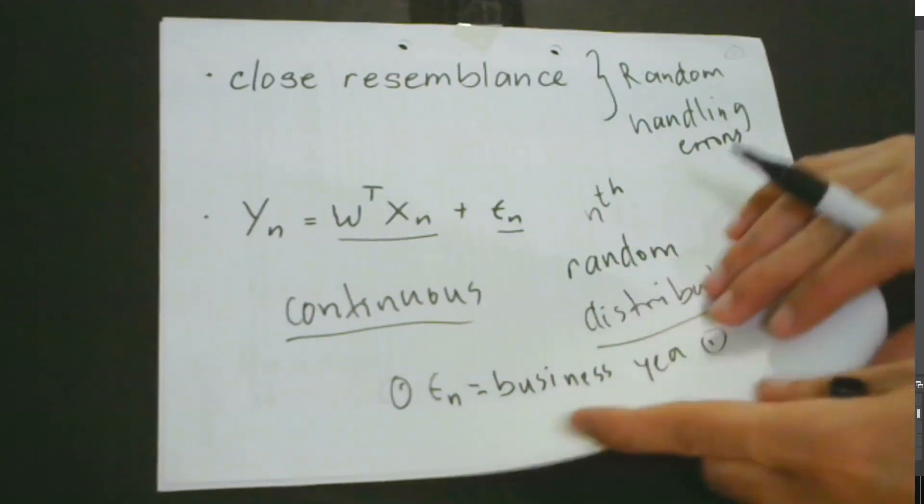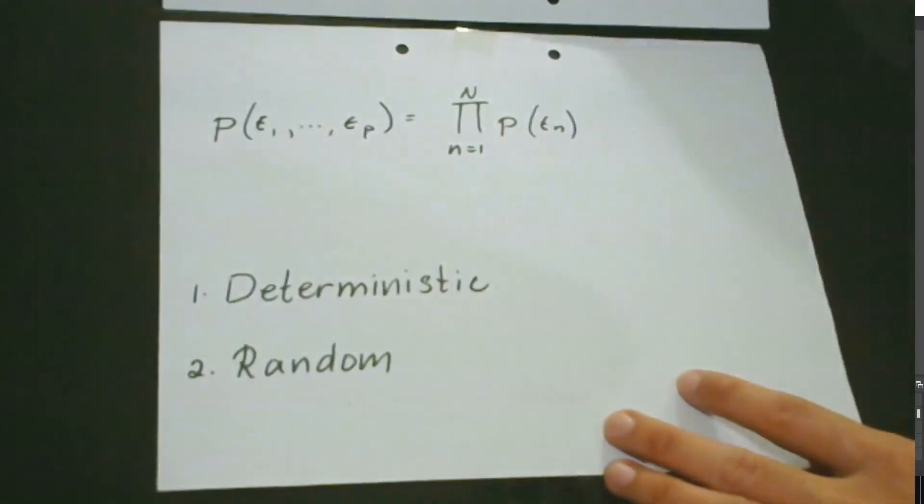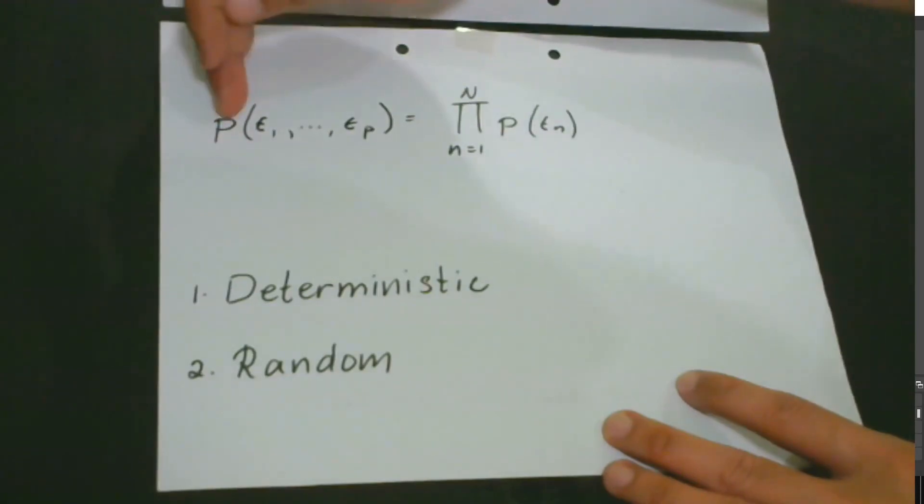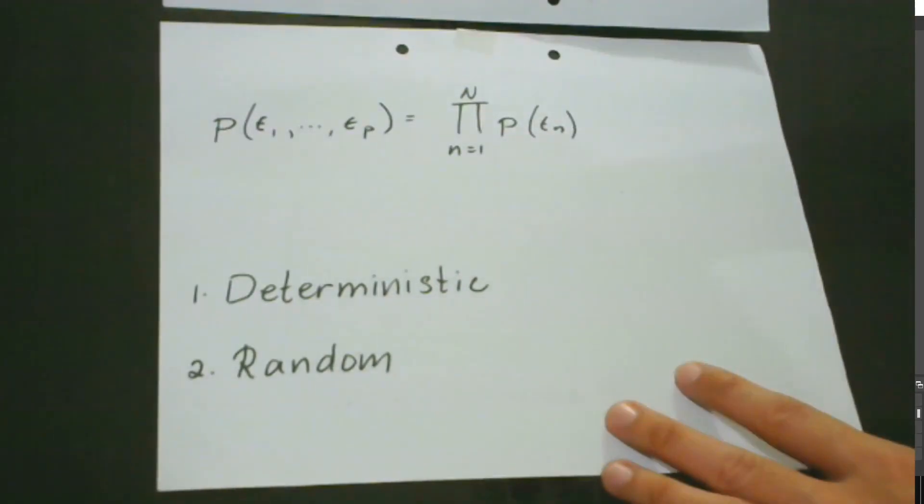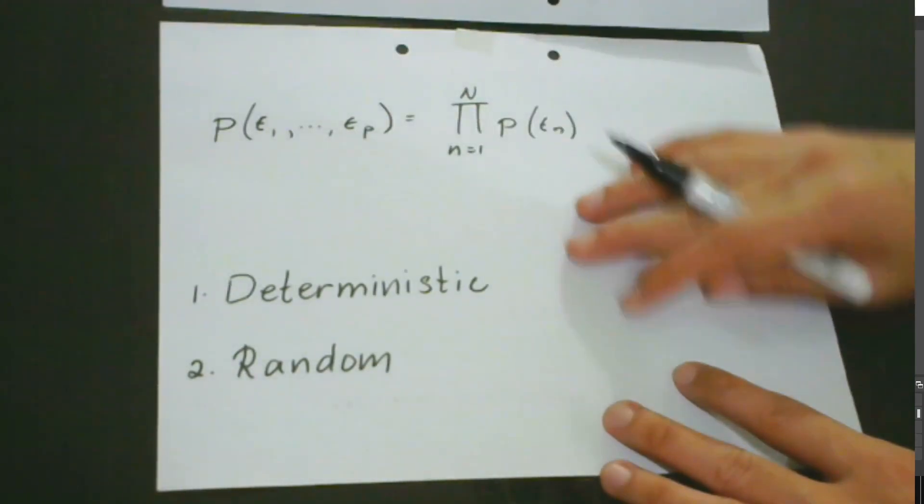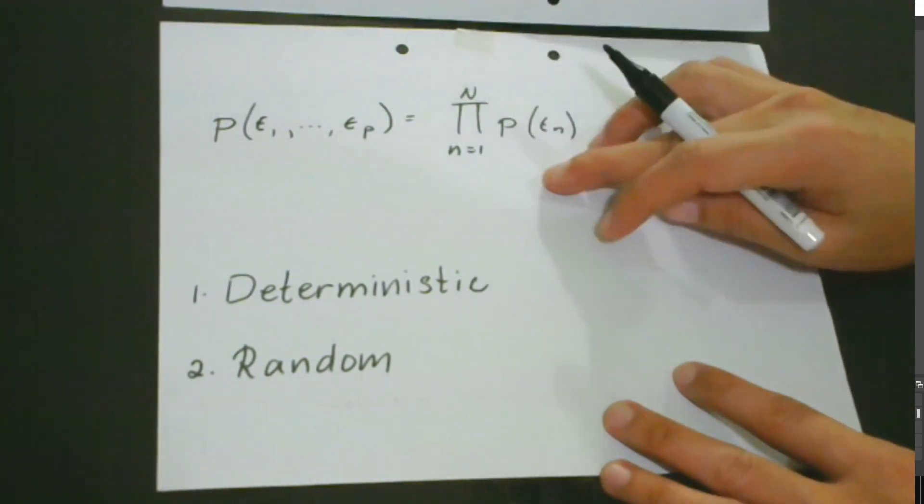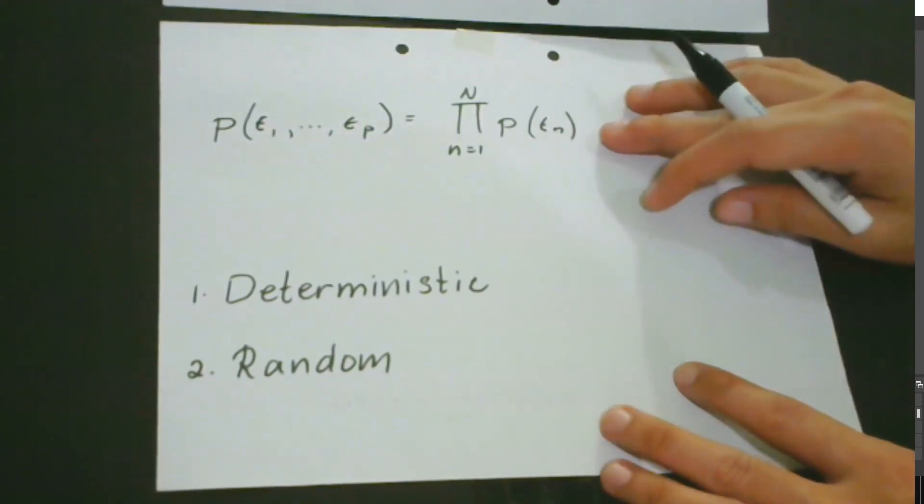Because of this, we now have this expression. We have the probability of our first random variable going to our random variable p, which is equal to the total product of the probability of our random variables.